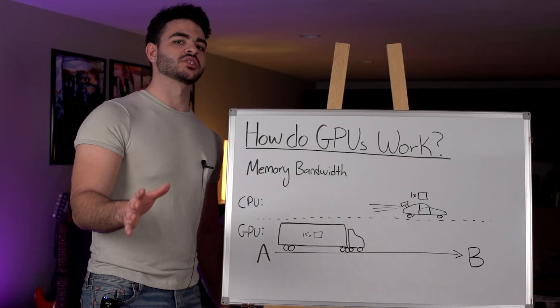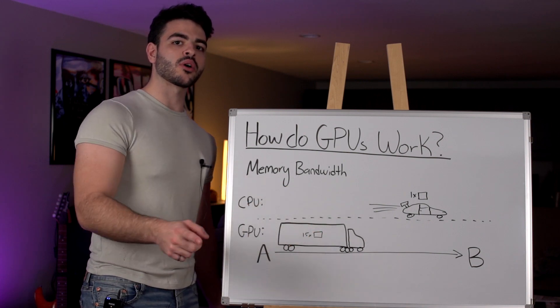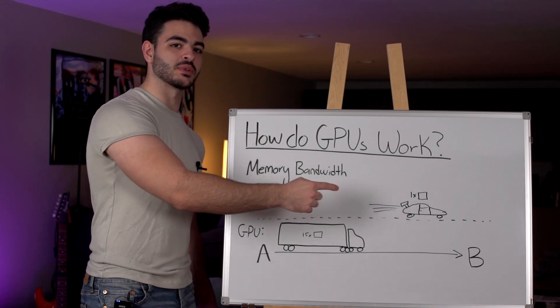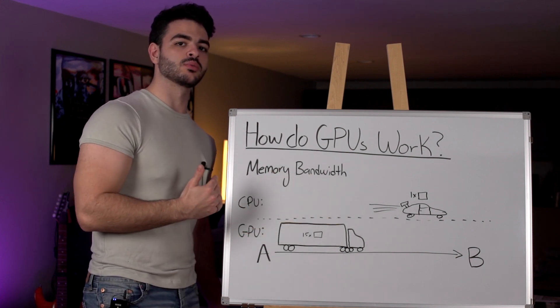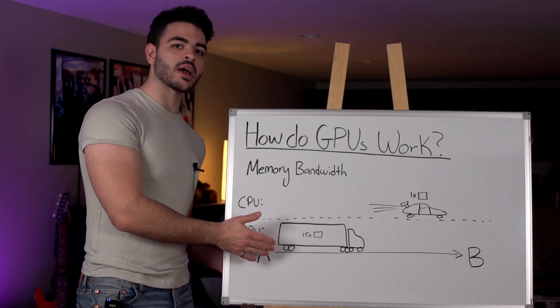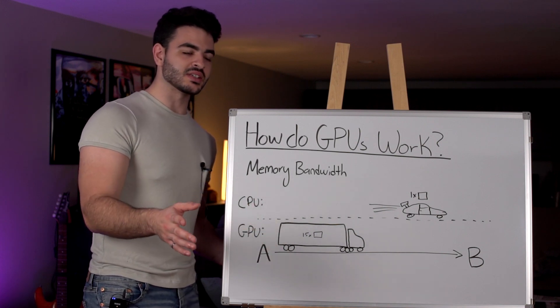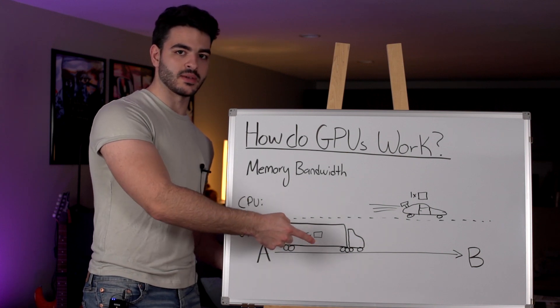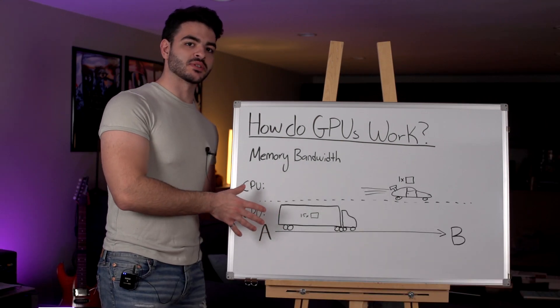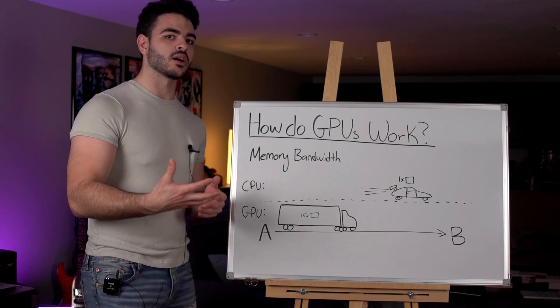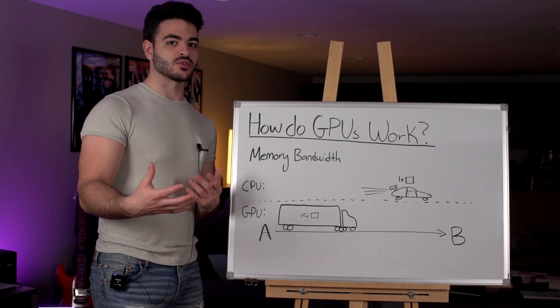Let's say you have 30 packages that you want to move between point A and point B. Your Ferrari can hold one package per trip, which means it has to make 60 trips to move all the packages. Now let's look at a GPU — a transport truck can carry 15 packages, which means it only has to make 4 trips. Knowing that each package represents memory, we can understand why a GPU is better at tasks that require a lot more memory to be used at once, like machine learning.